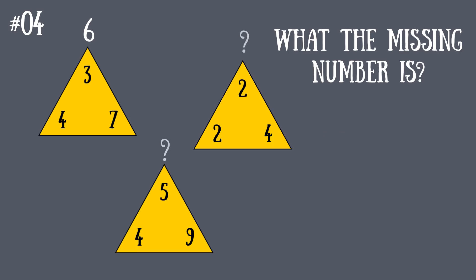Let's start with the first triangle. How can we get 6? By adding 3 to 7 and subtracting 4. And this is the exact correct pattern. For the second triangle, it will be 4 plus 2 minus 2, which is 4.